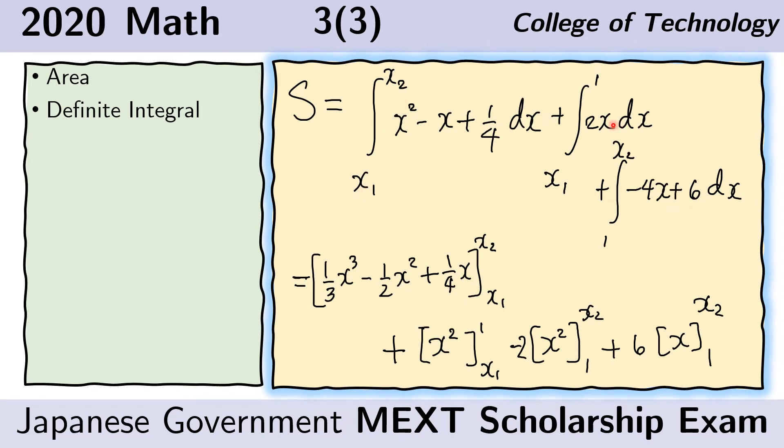For S1, the remaining integral would just be 2x. And so we get that integral from x1 to 1. And for S2, the remaining integral is negative 4x plus 6. So we get that integral from 1 to x2.